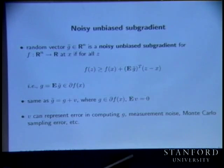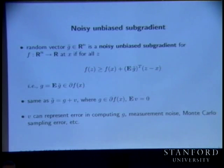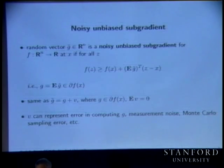We're going to see it's going to be Monte Carlo sampling error. If the function itself is an expected value of something, and you estimate it by Monte Carlo, then you write it down — if it's an unbiased estimator, it's unbiased, and v is the Monte Carlo sampling error.